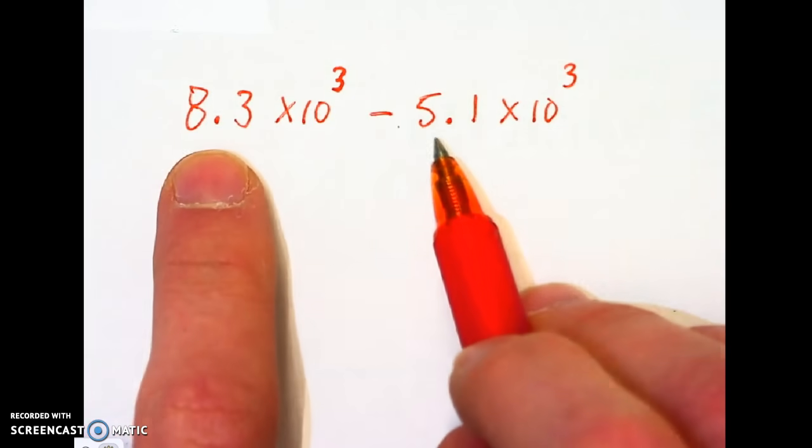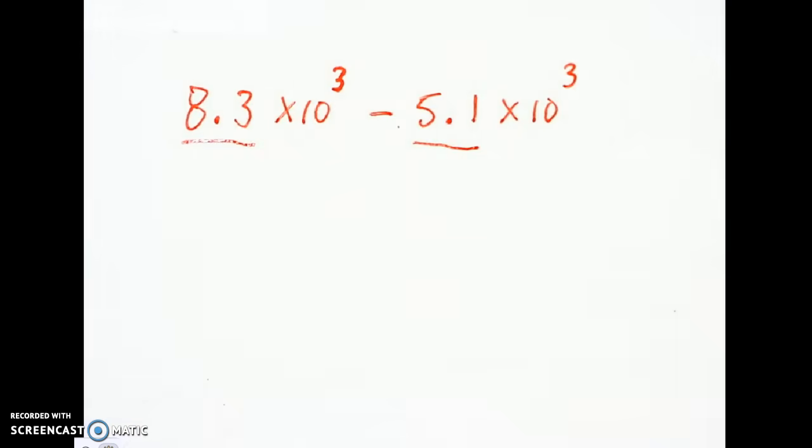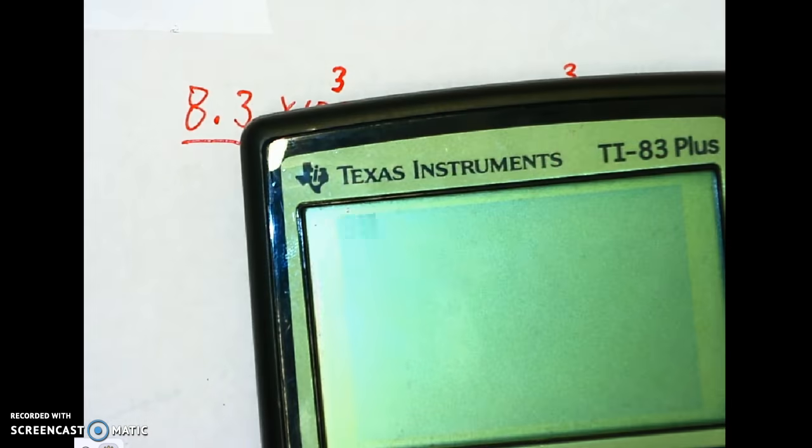So these both have a power of 10. So all I need to do is subtract 5.1 from 8.3. Let's do that real quick. 8.3 minus 5.1, 3.2.